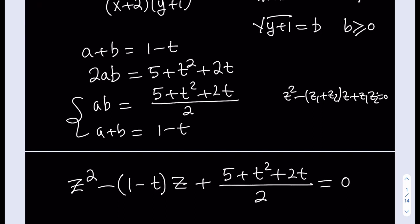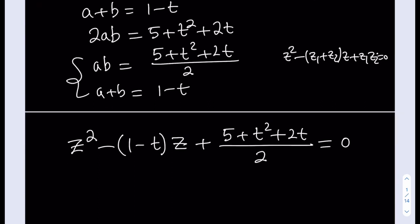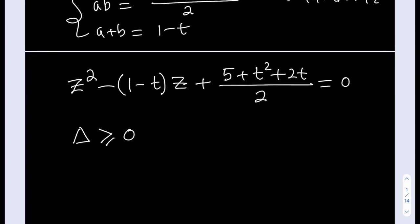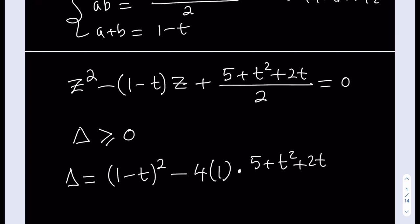What's critical here is that we're looking for real solutions, so this equation needs to have real solutions. In terms of the discriminant — I'll use the Greek letter delta — delta needs to be greater than or equal to 0. Delta is given by b squared minus 4ac. The discriminant is (1 minus t) squared minus 4 times (5 plus t squared plus 2t) over 2. Simplifying, the 4 divided by 2 gives a factor of 2.